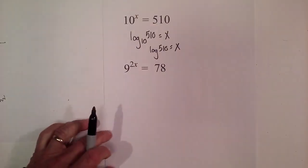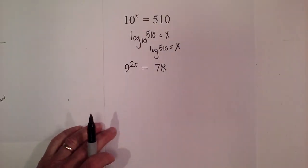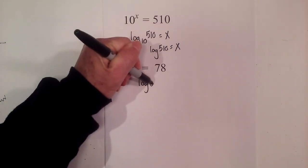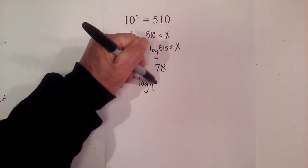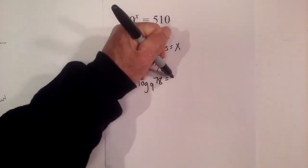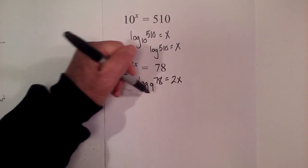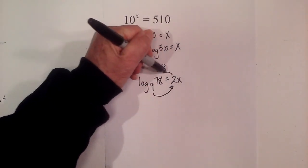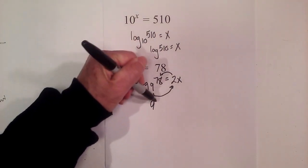Finally, let's do one more. We have 9^(2x) = 78, so log base 9 of 78 equals the exponent of 2x. We can check our work: 9 raised to the 2x power equals 78. 9^(2x) = 78, and that's your original equation.